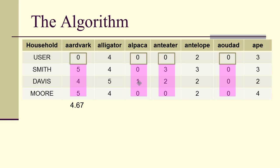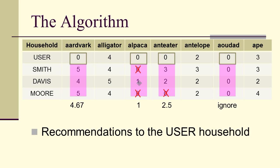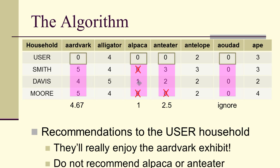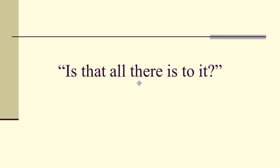We want to recommend some exhibits to the user. The user, Smith, Davis, and Moore — notice the user has zeros in several exhibits, which are marked. For the Art Park, averaging over the neighbors gives 4.67. Smith and Moore haven't seen the Alpaca exhibit so we throw those out — the nearest neighbor's prediction for Alpaca is 1. Likewise we get 2.5 for the Anteater. Nobody's seen the Addax so we ignore it completely. What do we recommend? The Art Park exhibit — we don't recommend Alpaca or Anteater.